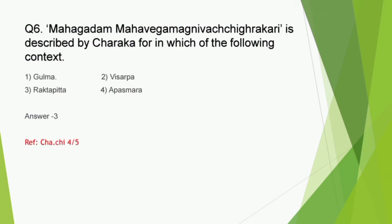Question number 6: 'Mahagadam Mahavegam Agnivat Shighrakari' is described by Charaka in which of the following contexts - Gulma, Visarpa, Raktapitta, or Apasmara? The correct answer is option 3, Raktapitta. This is a direct question from Charaka Chikitsa Raktapitta Chikitsita Adhyaya. Other important headings from Raktapitta include its specific Nidana, the order of Samprapti, certain specific Purvarupa like Lohagandha Nishvasa, its prognosis, Chikitsa Sutra, the concept of Pradhamarga Harana, Avastika Bhojana, and Shamana Prayoga in conditions like Mutragata Raktapitta, Kanthagata Raktapitta, etc.